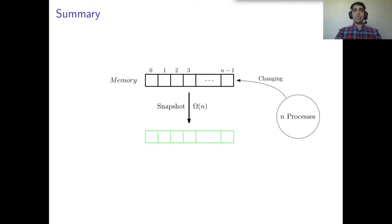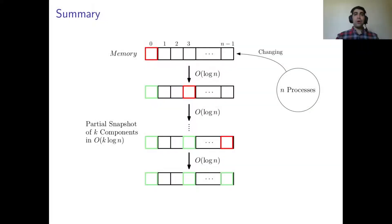In an asynchronous shared memory system with n-processes, single-writer snapshot objects provide consistent views of n-memory components, while the contents are concurrently being changed by processes. Clearly, under realistic assumptions about the object size, taking a snapshot of such memory takes at least omega of n steps. However, in several applications of the snapshot type, a process doesn't need to read the entire memory — capturing a consistent view of k-memory components suffices.